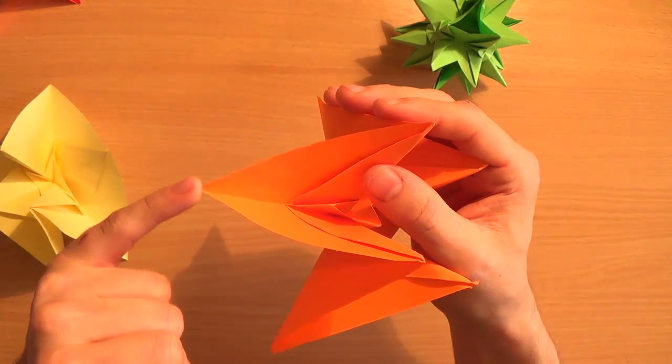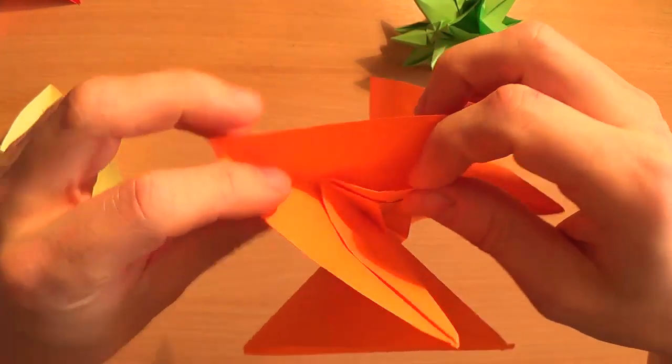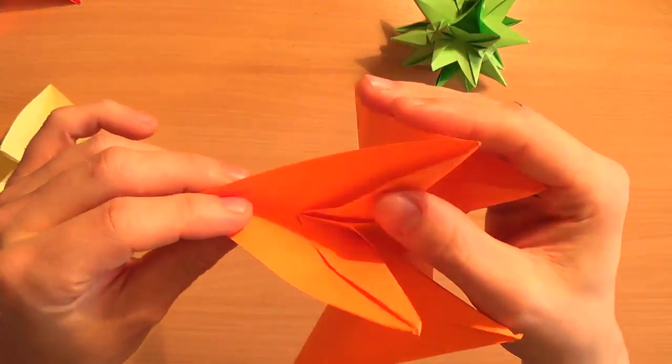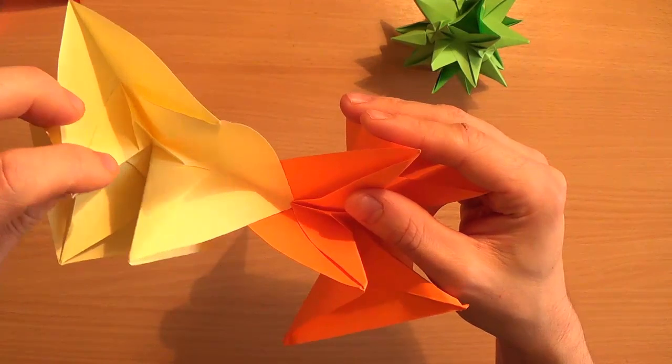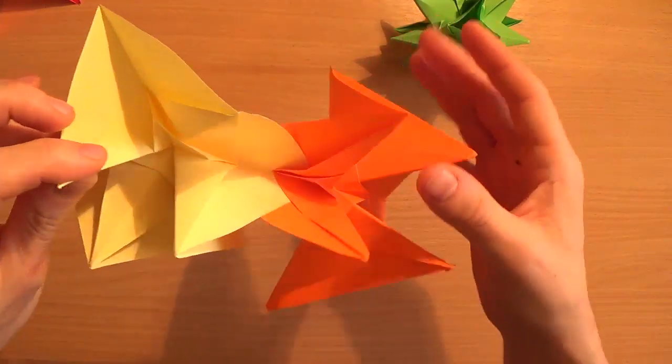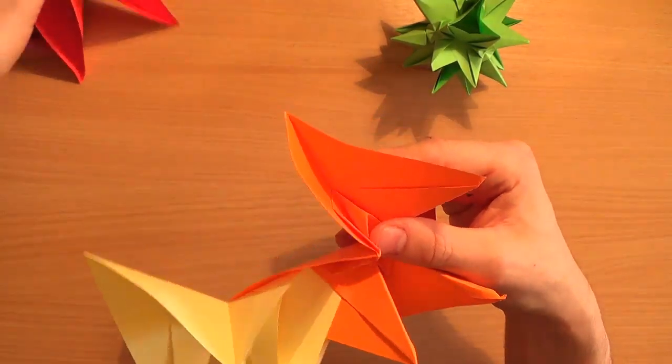Right. So these are flaps that point in. And the pointing in bit goes underneath that bit just there. So let's put this yellow one in the orange one. So it goes underneath that flap. And you push them as far together as they'll go.